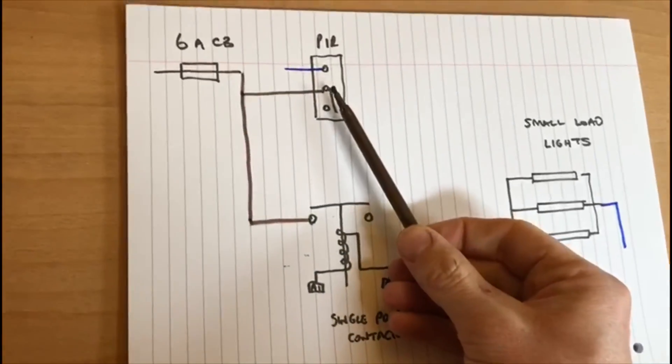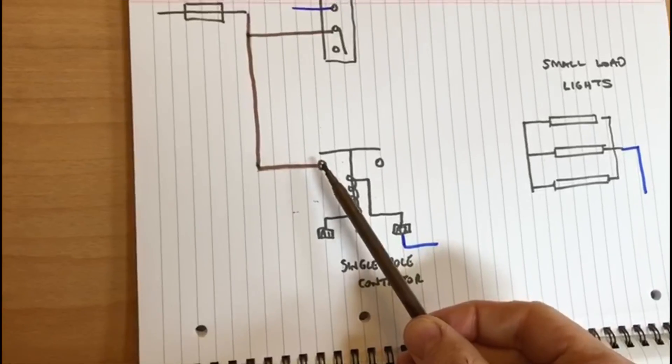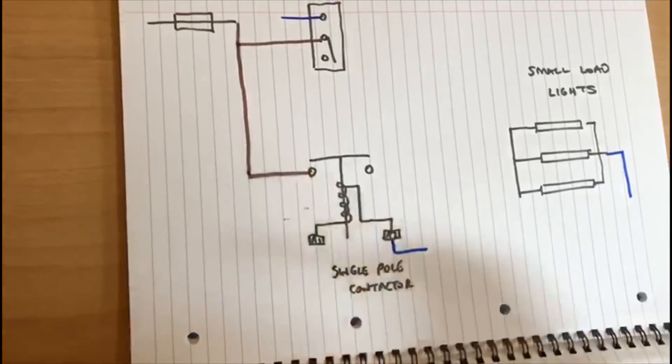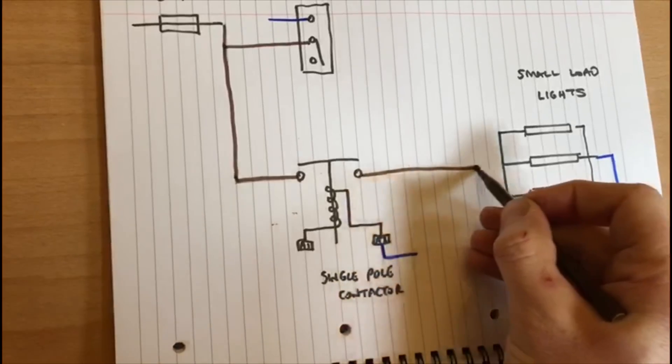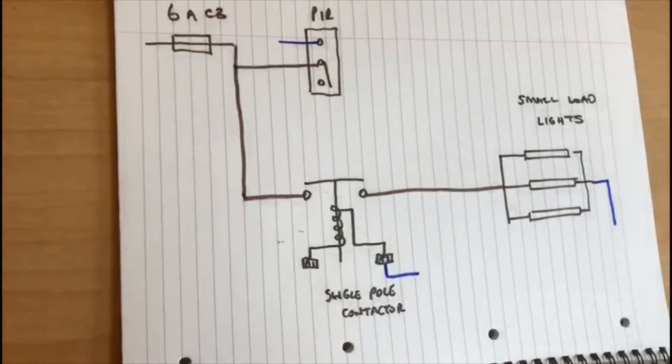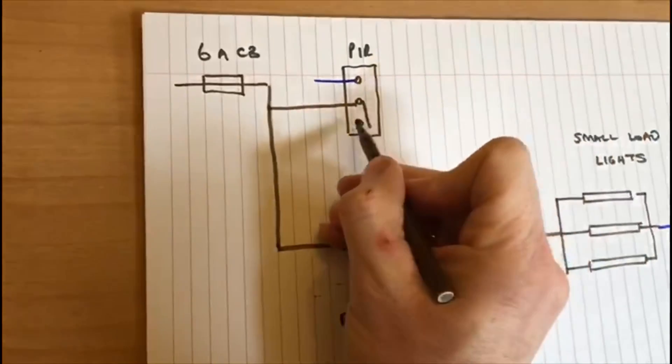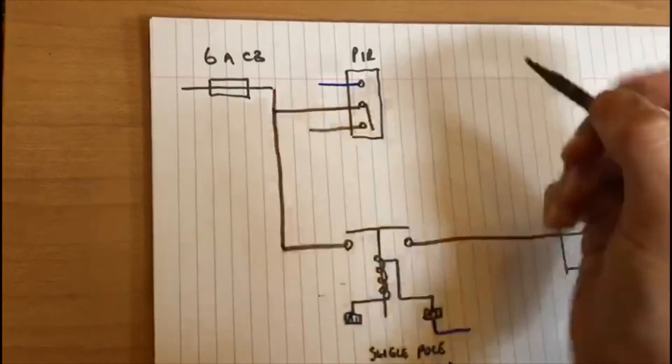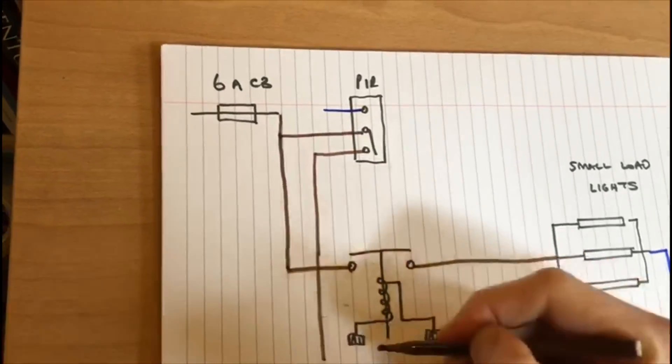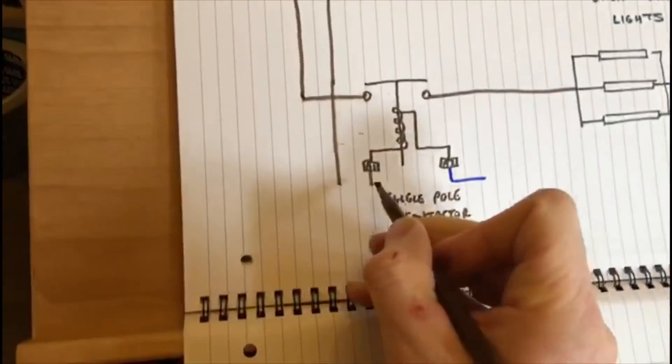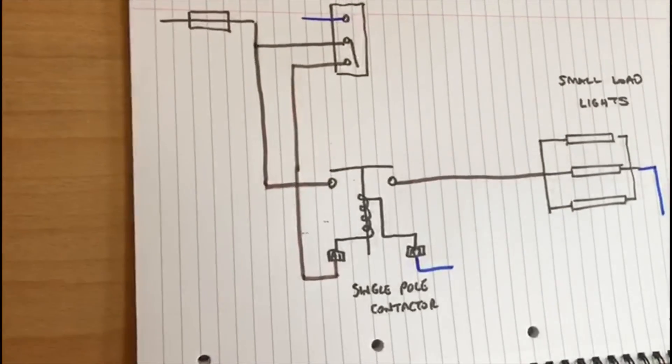So we've got a live feed coming up to the PIR, and we also have a live feed coming onto the contactor. We also then need to have a feed that goes across to the lights. And the only thing that's missing now is the feed from the switch, and that is going to operate the coil, in this case terminals A1.